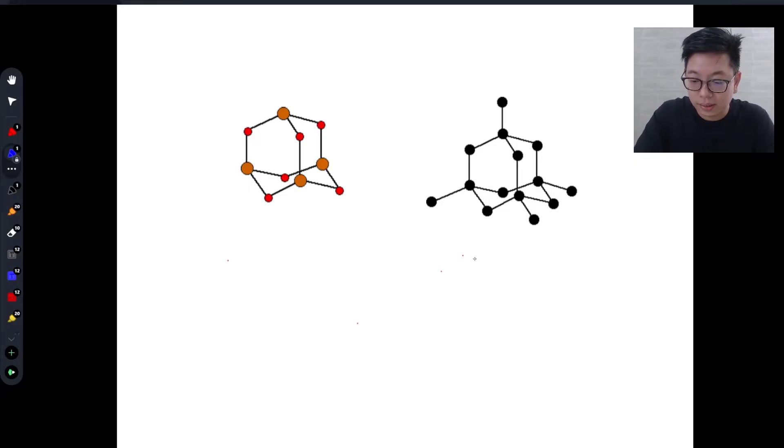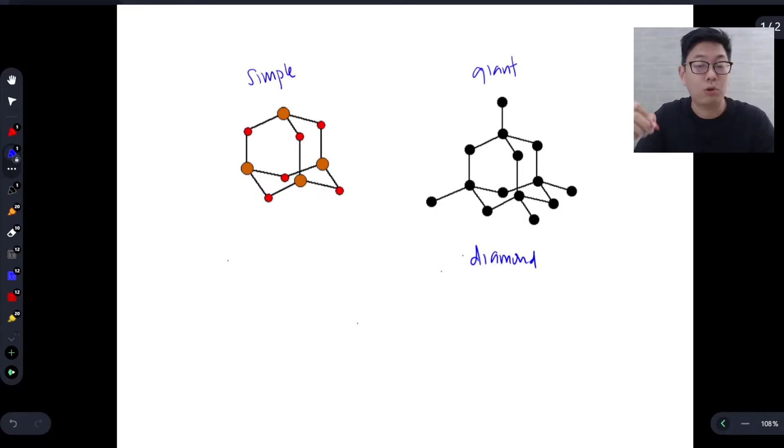Alright, so this here is diamond, okay? And if you recall, diamond is basically carbon atoms joined together by strong covalent bonds. Now, what makes this giant? So this is your giant molecular structure and this is your simple molecular structure or simple covalent molecule.